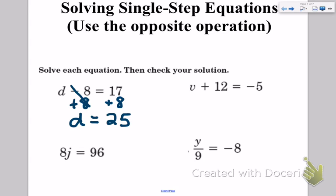If we look to the right, we have v plus 12 equals negative 5. In order to get v by itself, we have to move that 12. Since we are adding 12, we have to do the opposite of that. The opposite of addition is subtraction. So we must subtract 12 from both sides in order to maintain that balance in the equation. Positive 12 minus 12 cancels out to get 0, and then we get negative 5 minus 12 to get negative 17.